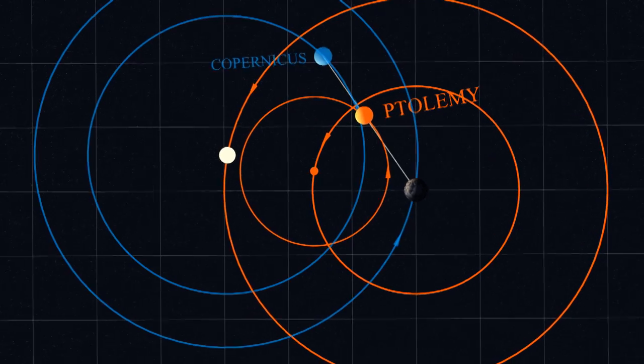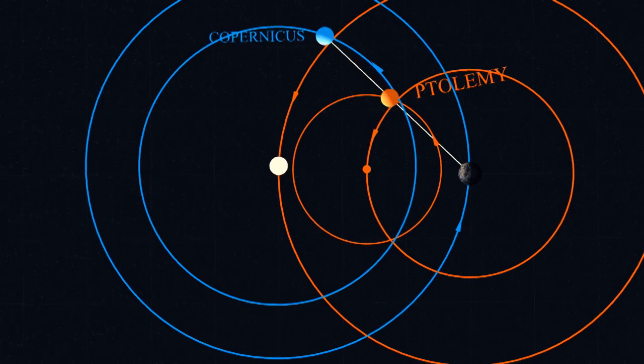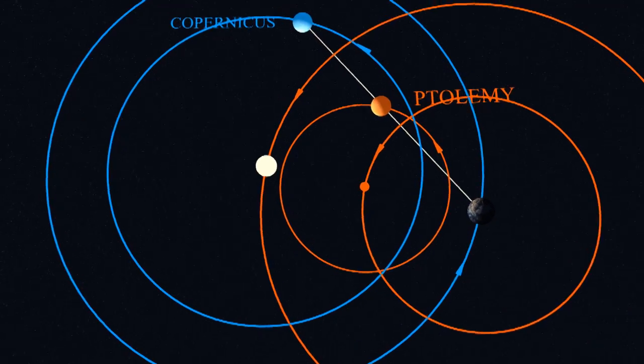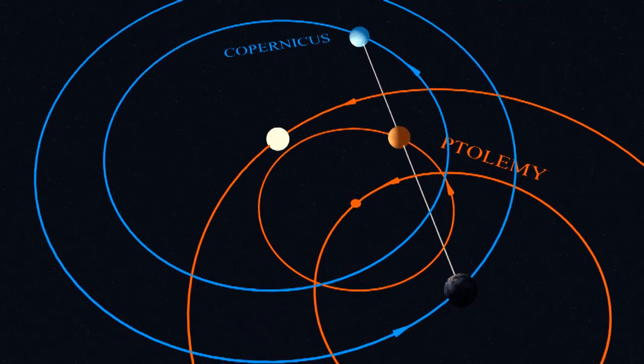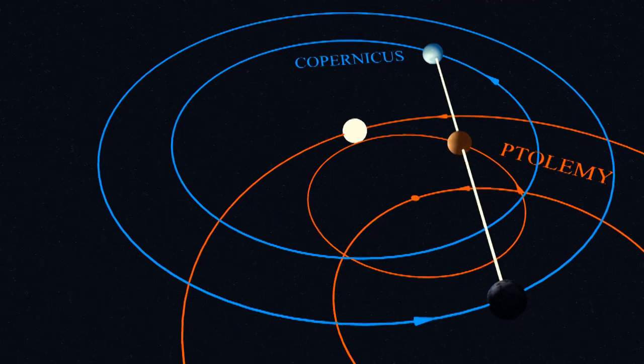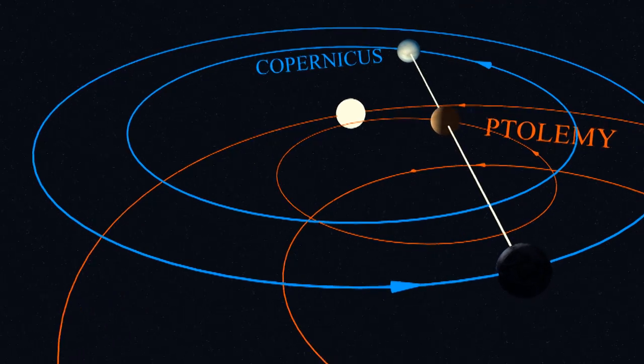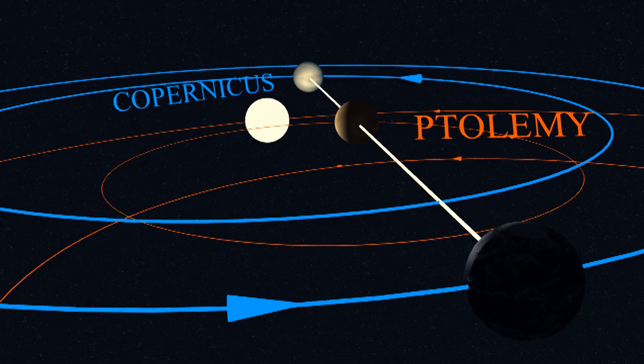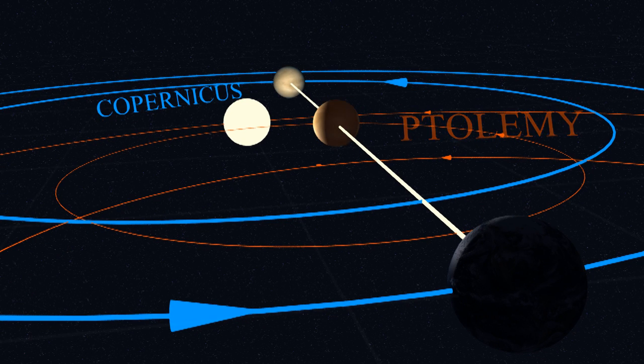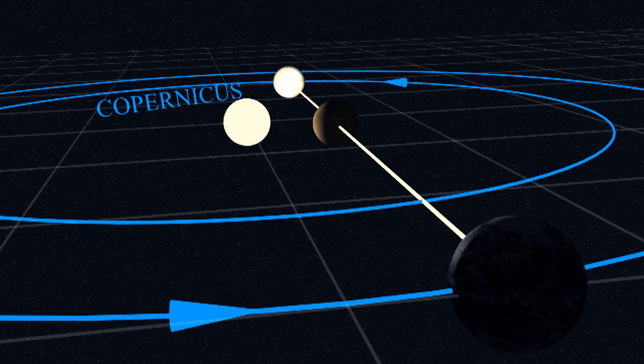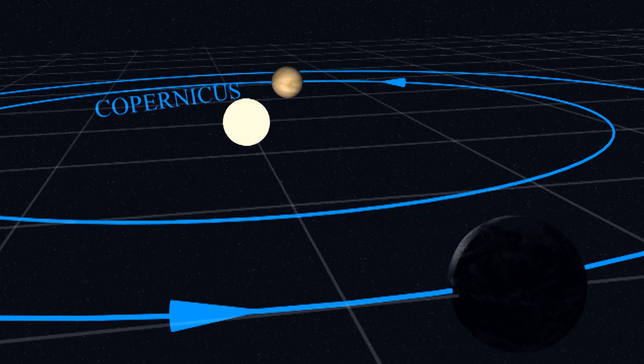Ptolemy and Copernicus both give similar predictions about where Venus should be. Remember, they can only measure the angle to Venus, not the distance. But Ptolemy predicts that Venus is in a crescent phase here, while Copernicus predicts that it's nearly full, which is exactly what Galileo saw.